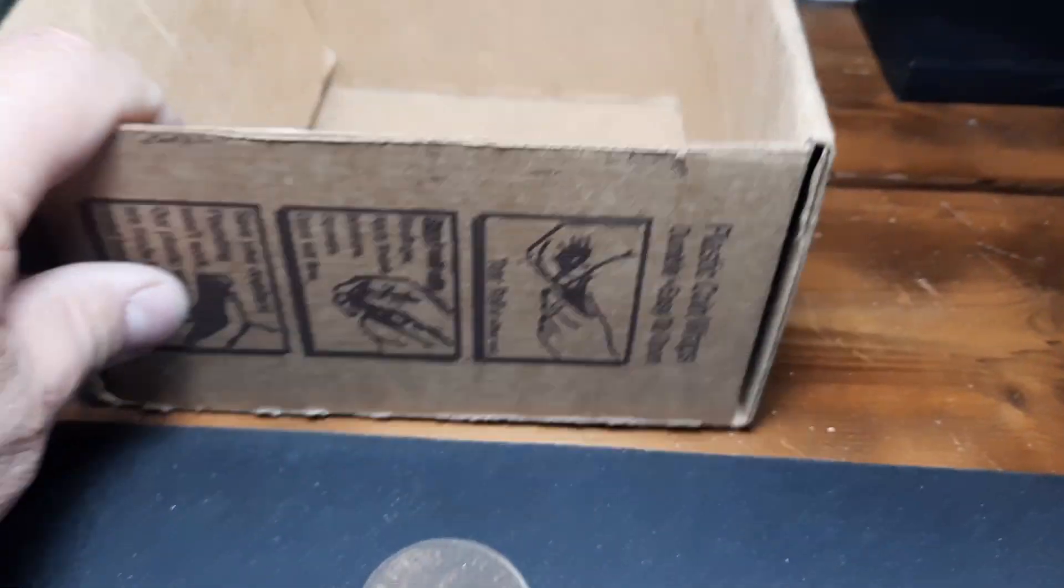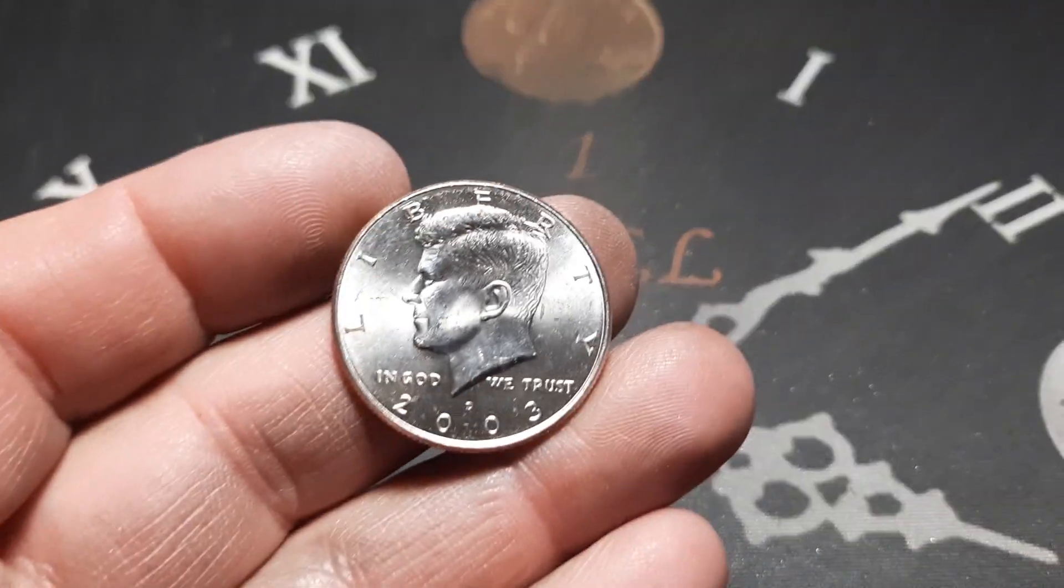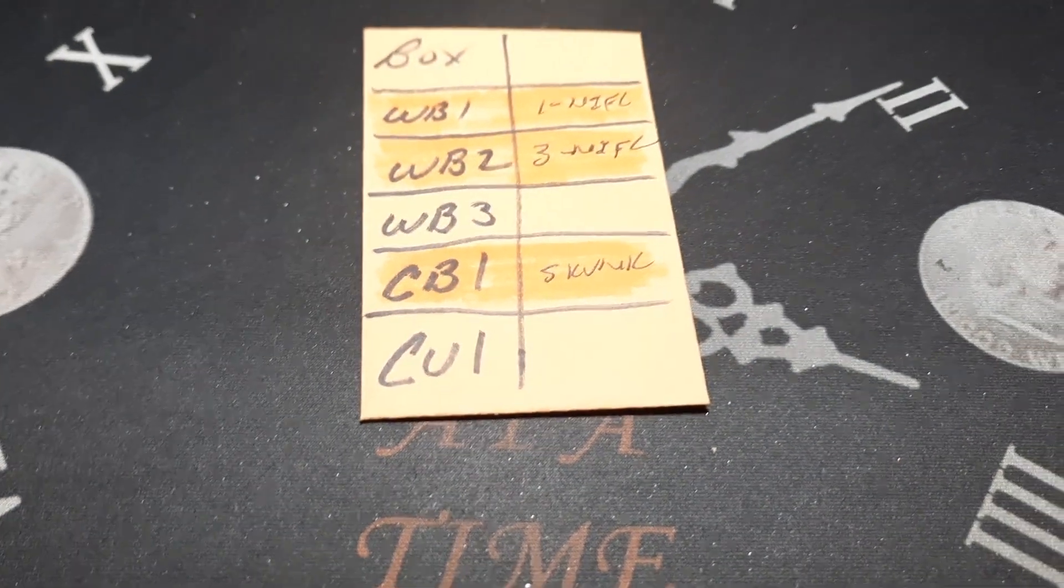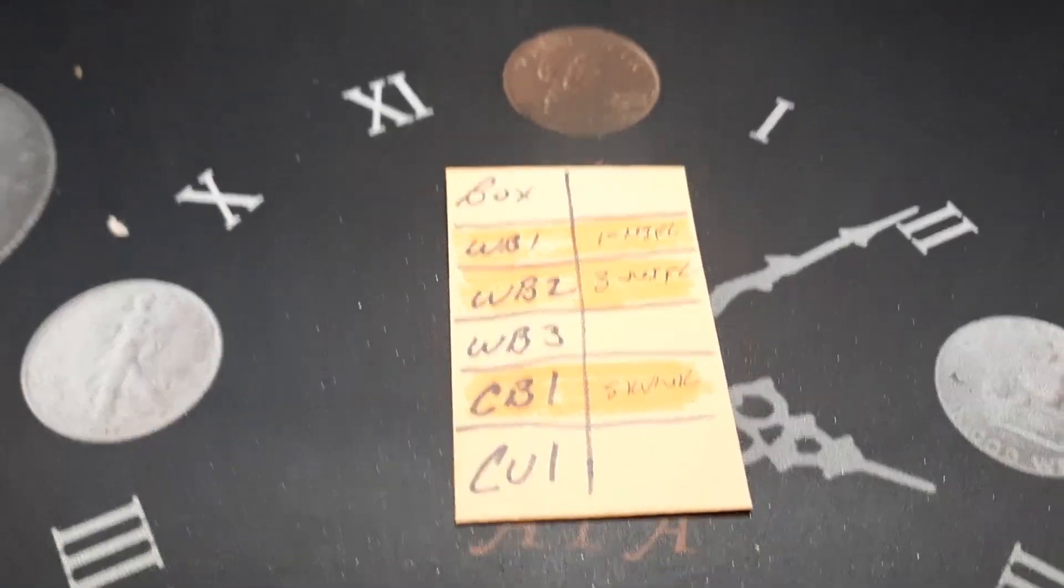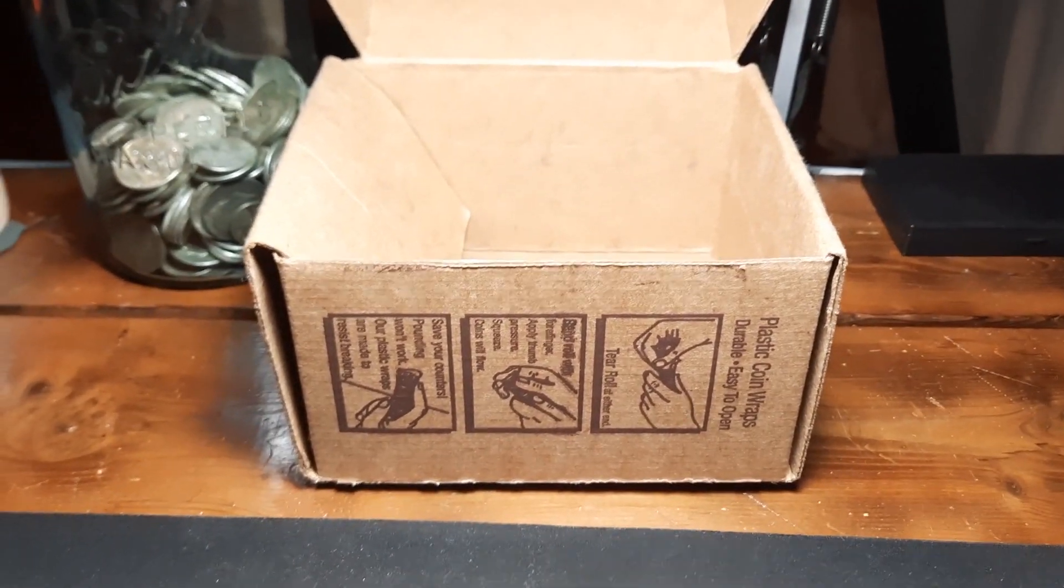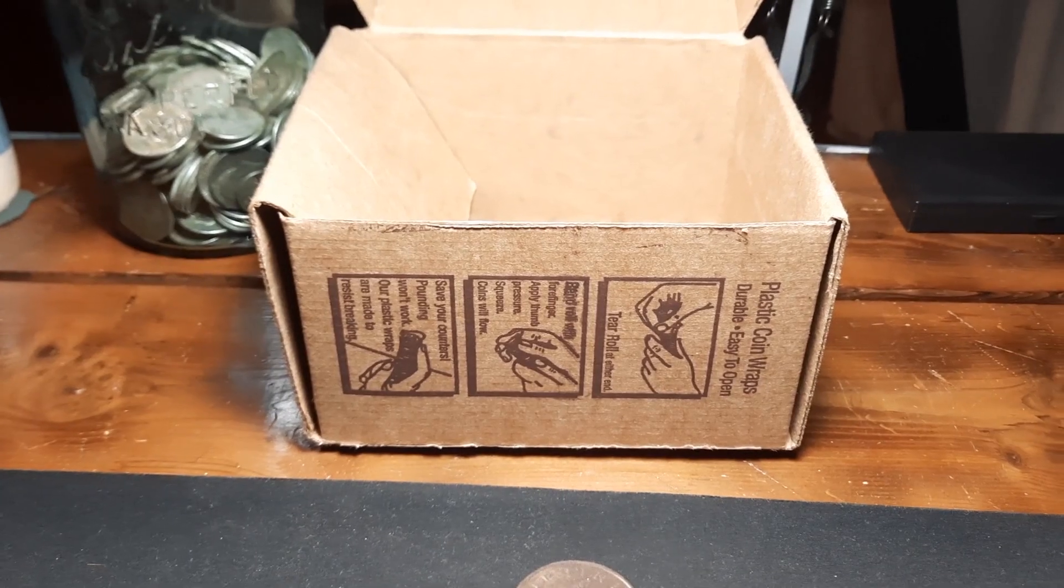All right, box number one is a wrap and all we have to show for it is a 2003 NIFC. Hopefully CU1 has some silver. That's our last hope for the weekend. All right let me grab that, get it up here. We'll pop it open, take a peek, see what we have and get hunting. Be right back.